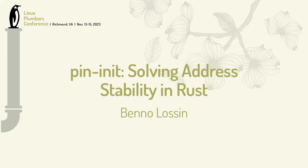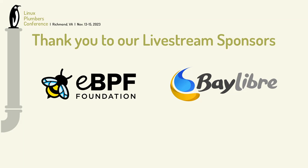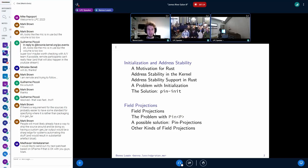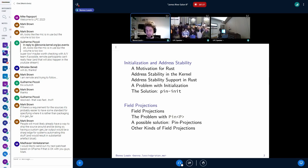As Miguel said, I'm going to talk about address stability in Rust and also field projection in the second part. My talk is split into those two parts: first talking about initialization and address stability, and then about field projection. The first part will involve less Rust, and the second part will require a bit more Rust knowledge, so mileage may vary.